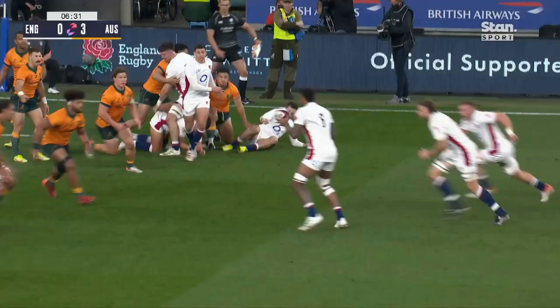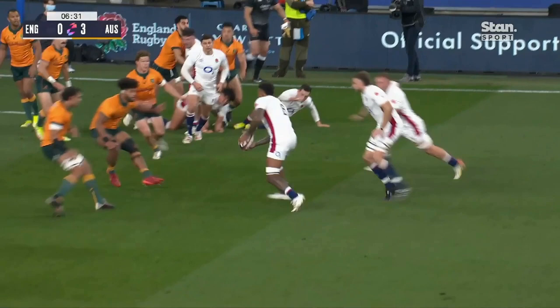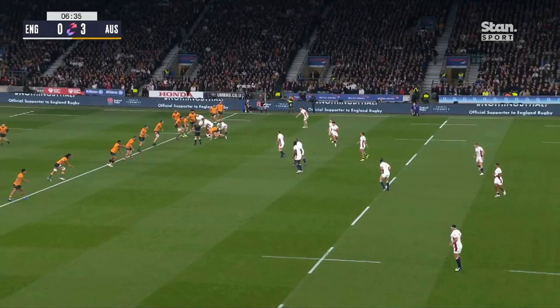Again, look at how close to the tackle line Laws plays. That means the inside ball gets Underhill through the contact, and the end result is quick ball. England's ruck speed has beaten Smith to position, so Fowl, having now pushed up to first receiver, plays a short pass to keep forward momentum going.